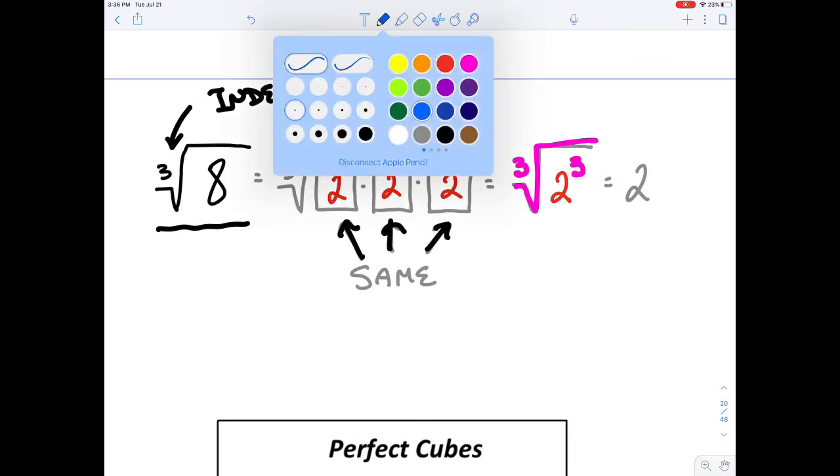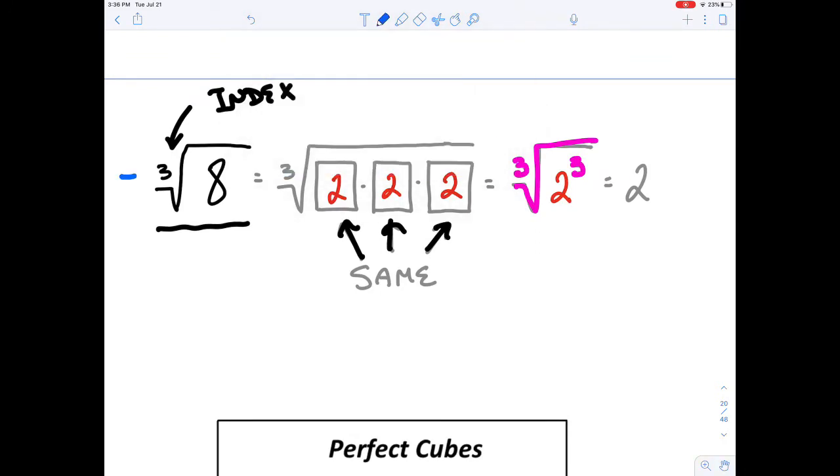If we were to have a negative on the front, we would have a negative on our answer. Interestingly, with cubes, if we had a negative on the inside, we would still have a negative 2. Because negative 2 times negative 2 times negative 2 would still equal negative 8. So that would work either way.